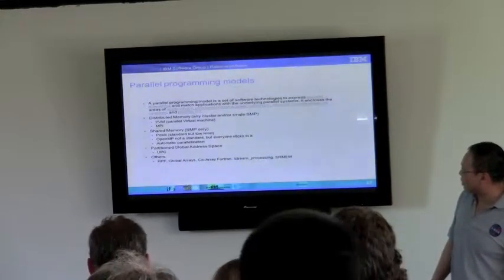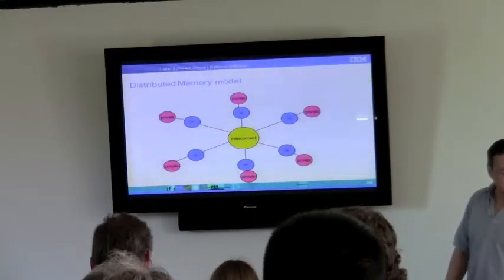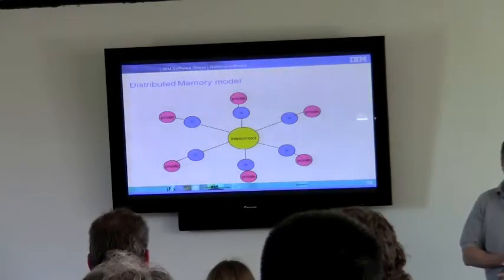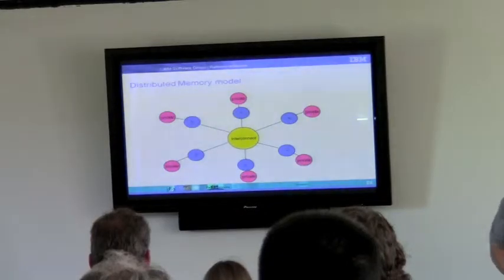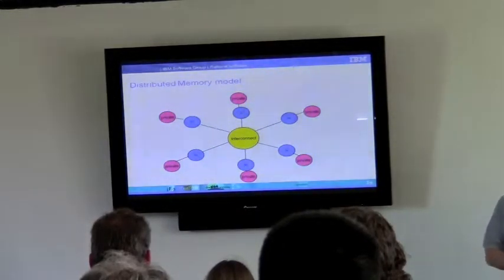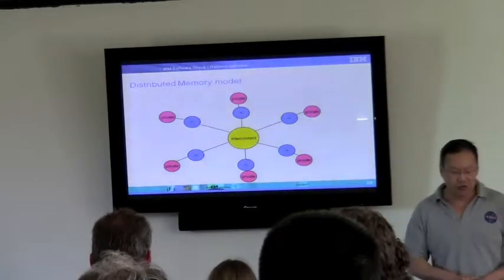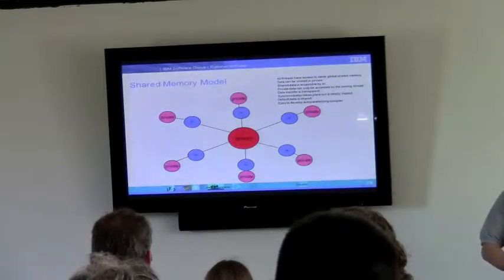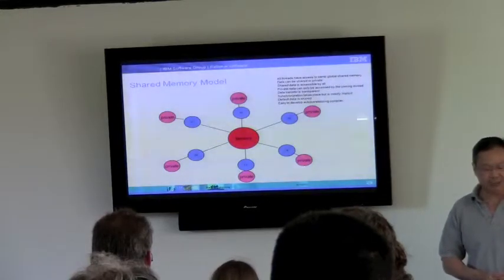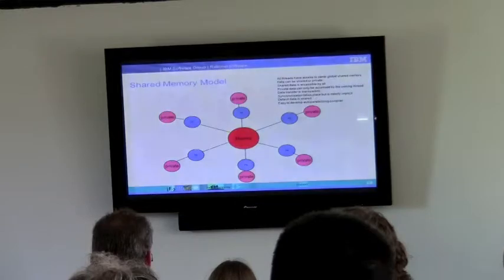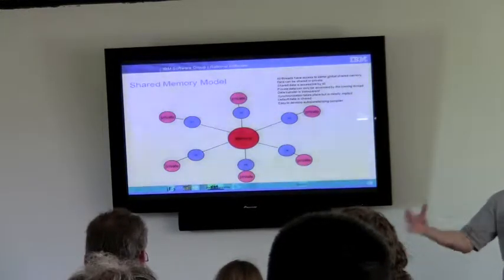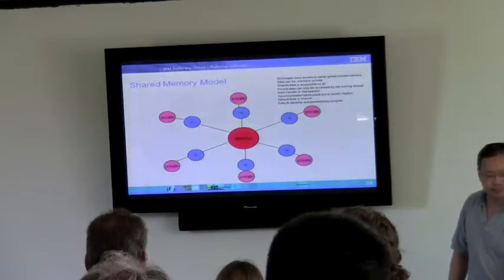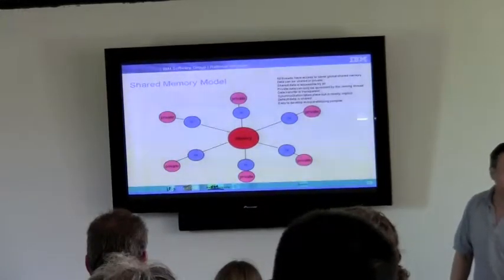This is primarily about different parallel programming models. The distributed memory model: by default data is private, each thread has its own private memory, nothing is shared, data transfer and synchronization has to be coded explicitly. It's very hard to develop auto-parallelizing compilers in this environment. The OpenMP model is a shared memory parallelism where all threads have access to the same global shared memory. Data can be shared or private, but by default it's shared — you have to deliberately do something to make it private. It's essentially the opposite of the distributed parallelism model.